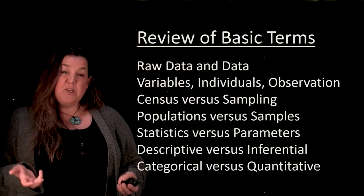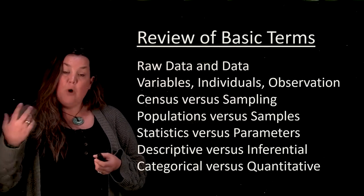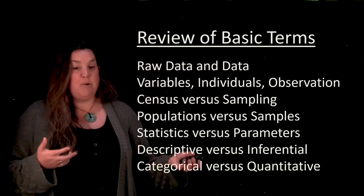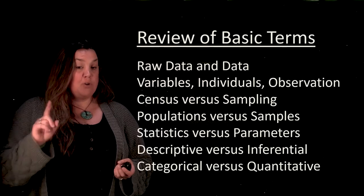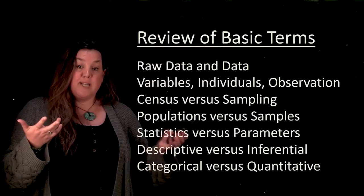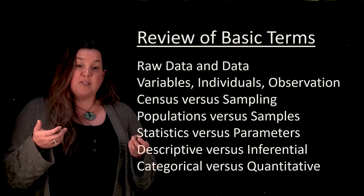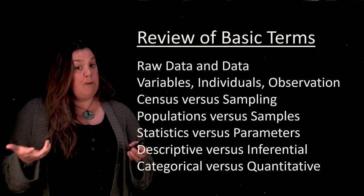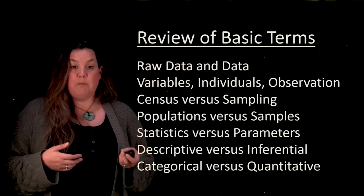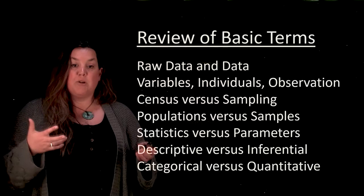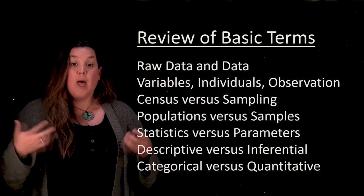We talked about how there are numeric summaries for those groups: we have statistics and we have parameters. Remember that the P's go together — populations have parameters, meaning parameters are numeric summaries for a population. And the S's go together — a statistic is a numeric summary for a sample. That's how we remember which numeric summary goes with which group.